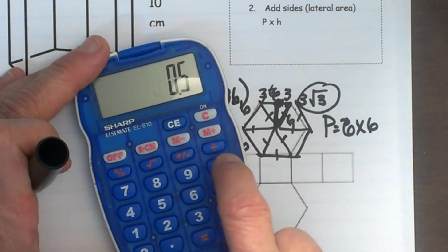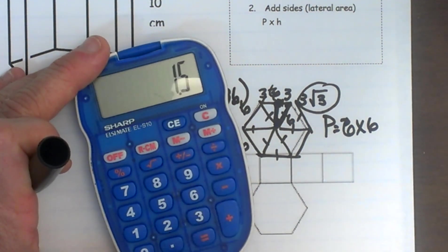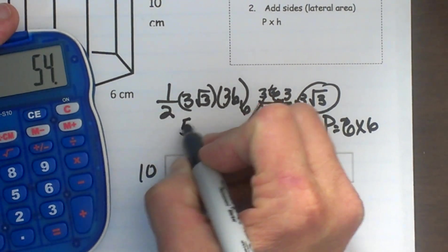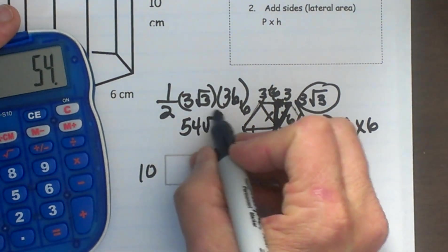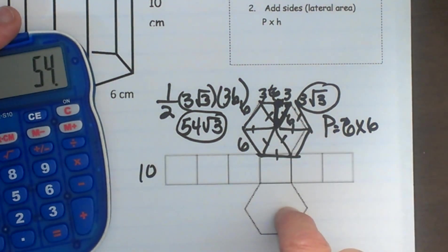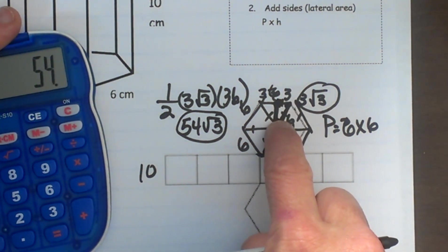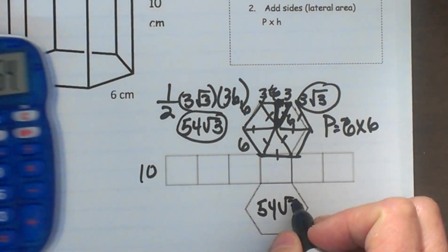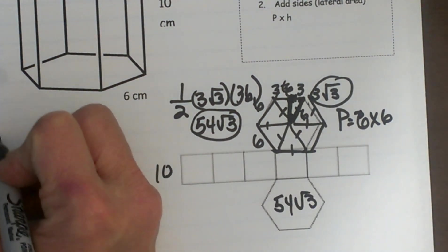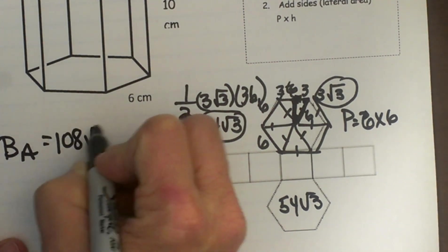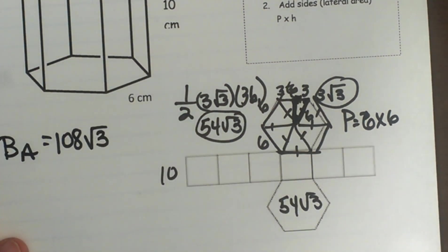0.5 times 3 times 36. That gives me 54 and I just stick the square root of 3 right next to it. And that gives me the area of one of my bases. But remember I have 2 of these. So if this one is 54 square root 3, I know this one also has to be 54 square root of 3. So that is the area of my bases. My base areas are 108 square root of 3 because I just add 54 and 54.